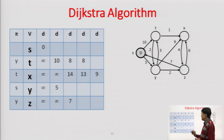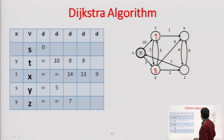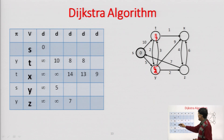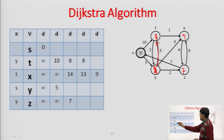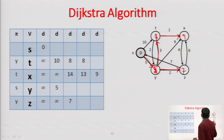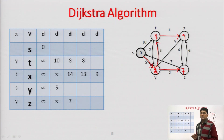Finally, we have come up with this matrix. We have set the final predecessors. The distances are: S to Y is 5, S to T is 8, S to X is 9, S to Z is 7. Through the predecessors, we can find which path was followed: T's predecessor is Y, meaning we followed the Y-T edge. X's predecessor is T, so we follow the T-X edge, with S-Y and Y-Z edges as well. So if you want to go from S to X, the path followed is S to Y, Y to T, and then T to X. This way, you can find out the shortest path between a source and all other vertices.